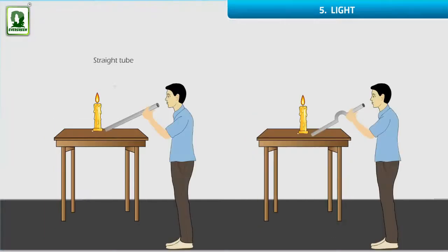Experiment. Take a lit candle, view it through a pipe. First, when pipe is straight. And second, when the pipe is bent.